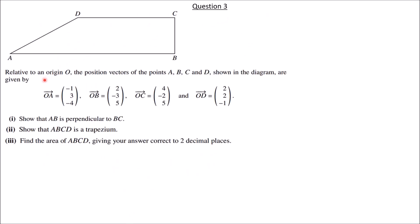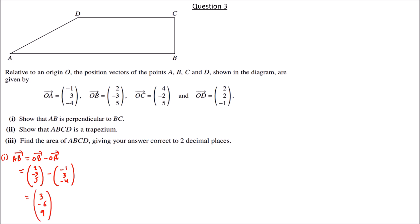Question 3. Relative to an origin O, position vectors of points A, B, C, D are given. Show that AB is perpendicular to BC. We find vector AB = OB − OA = (2, −3, 5) − (−1, 3, −4) = (3, −6, 9).